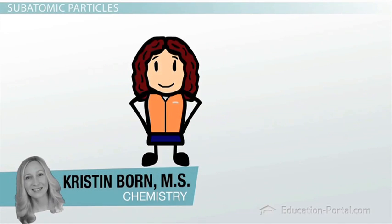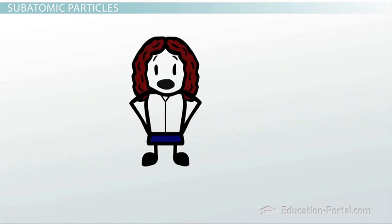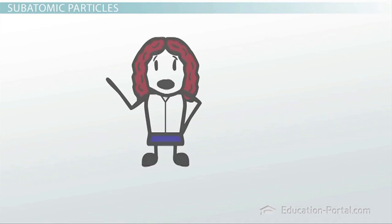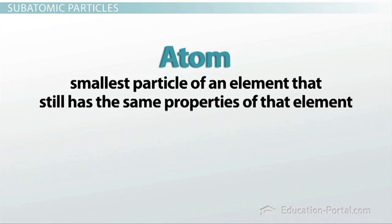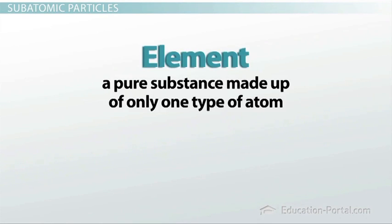Did you know that you are made up of mostly empty space? That is not meant to be an insult, more of an example of how you are made up of atoms and most of the volume of an atom is completely empty space. An atom is the smallest particle of an element that still has the same properties of that element. Remember that an element is a pure substance made up of only one type of atom.